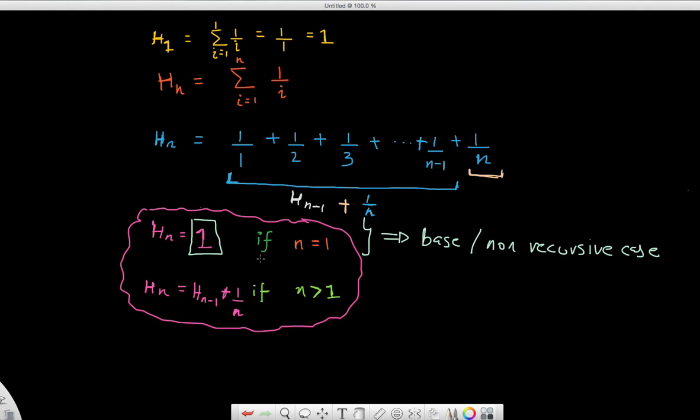And I can write a function called harmonic series that takes in an n, and I'm just going to write a conditional statement that if n is equal to 1, return 1. Else, if n is actually greater than 1, then we're going to return back whatever is h of n minus 1 plus 1 over n.